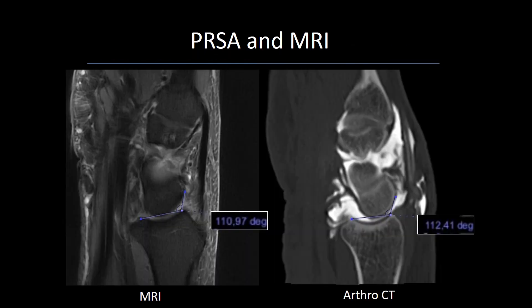We described this measurement on CT, and this article was performed entirely on CT measurements. However, since the same landmarks can be detected on MRI, the same measurement can be performed there as well. This slide shows an example of the same patient evaluated on both MRI and CT, with the PRSA angle showing about a two-degree difference between modalities, confirming that a similar evaluation can be performed on MRI.